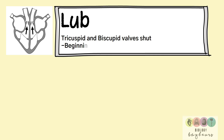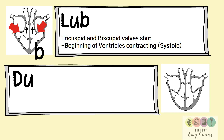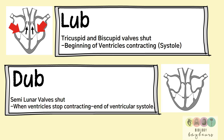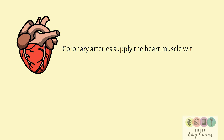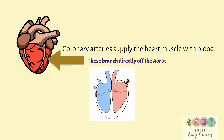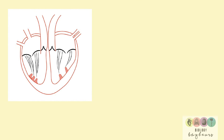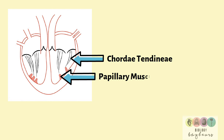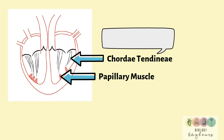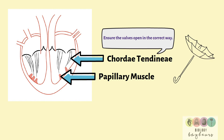The first part of the sound, the 'lub', is caused by the tricuspid and bicuspid valves shutting, and this is at the beginning of ventricular systole. The 'dub' sound is created when the semilunar valves shut, which happens when the ventricles stop contracting — at the end of ventricular systole. It's important to know that the coronary arteries are the blood vessels that supply the heart muscle with blood, and they branch directly off the aorta. Two labels which are often examined are the chordae tendineae — the heart strings — attached to the bicuspid and tricuspid valves and then to papillary muscles on the ventricle walls. The chordae tendineae ensure the valves open correctly and don't flap backwards up into the atria.